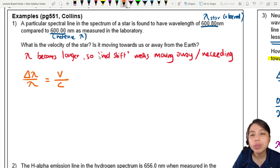So change in wavelength—the general one you can stick with is whatever you observe minus whatever your reference wavelength is. In this case, it will be the lab.